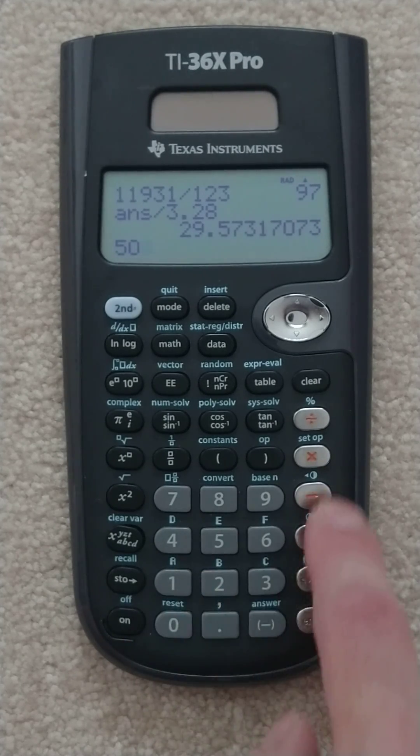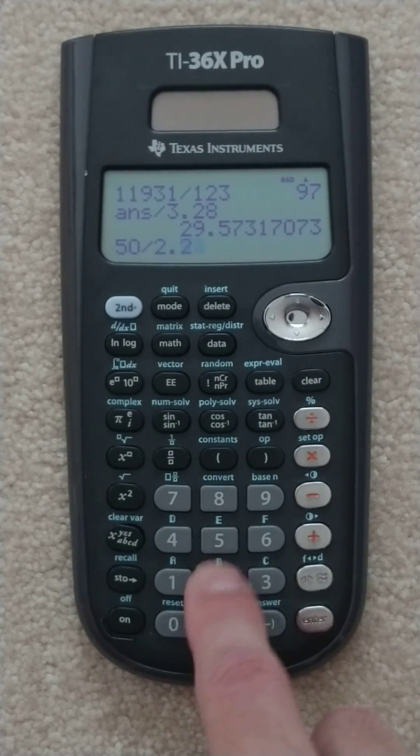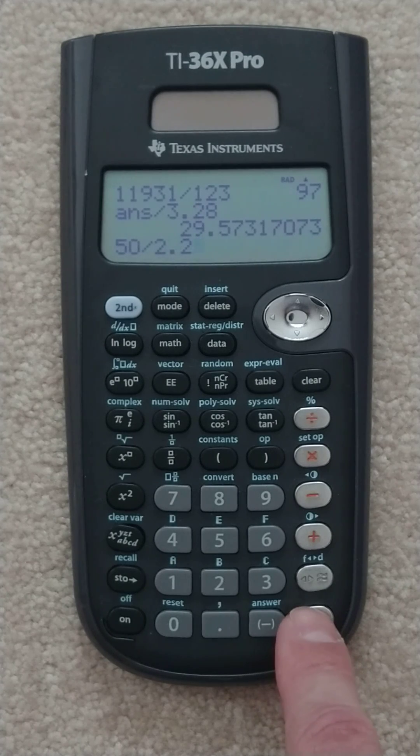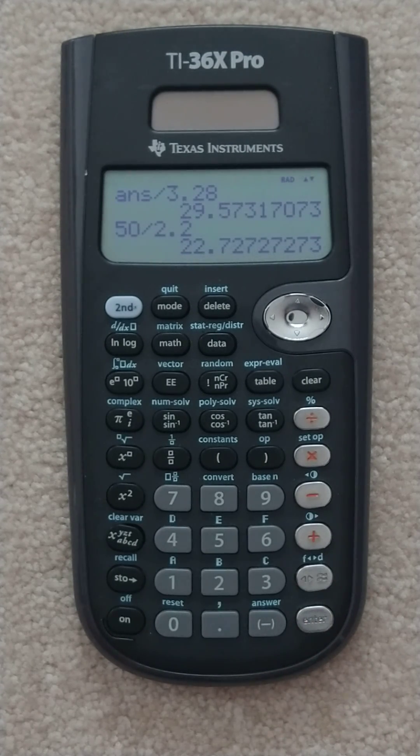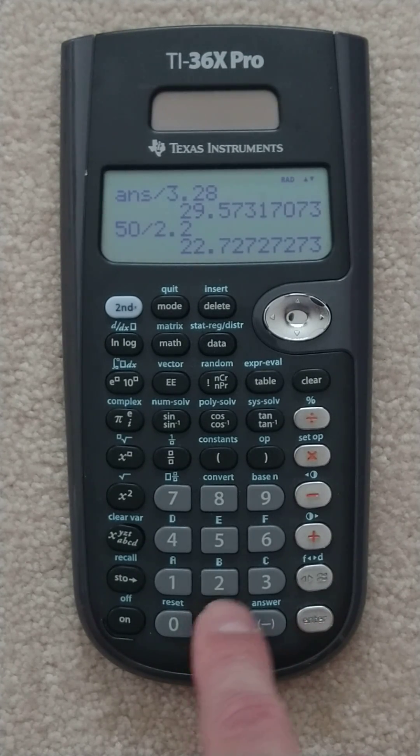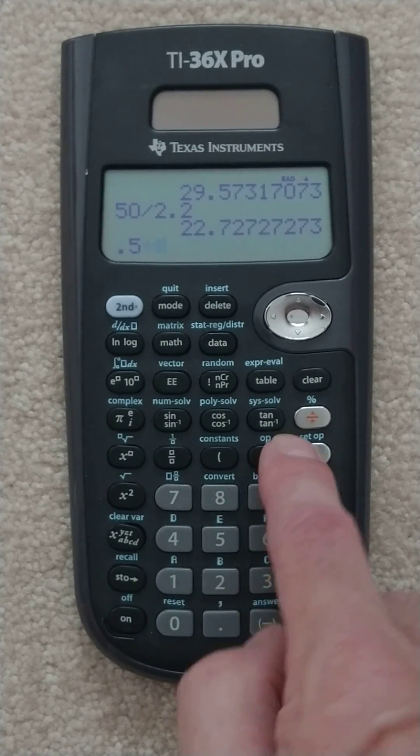And now let's convert our 50 pounds mass by 2.2 to convert it to kilograms. And now let's use our kinetic energy equation which is one half the mass.